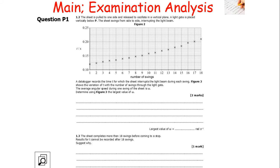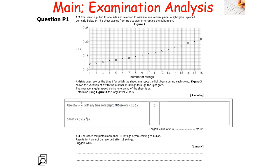The sheet is pulled to the side and released to oscillate in the vertical plane, with a light gate placed directly below P. The sheet swings back and forth, interrupting the light beam, and a data logger records time T for each interruption. We need to determine the largest value of average angular speed ω using figure 3. Since ω = 2π/T, we need the smallest T to get the largest ω. The smallest T is 0.12 seconds at one swing, giving ω = 2π/0.12 ≈ 5.8–5.9 rad/s.